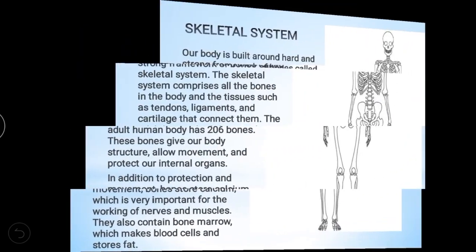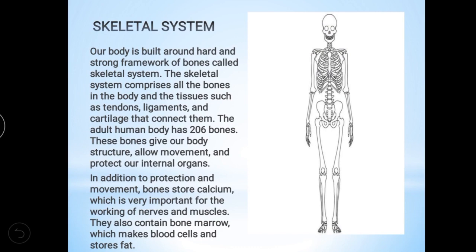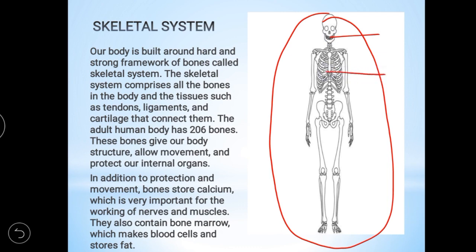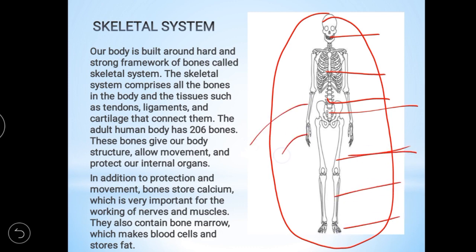We will move on to the next topic. First we are going to learn the skeletal system. Can you see the picture? There is a skeletal system. In the head part it is a skull; the heart is protected by the ribcage; there is a spinal cord, girdles, legs, fingers, hands, and shoulder bone. These are parts of the skeletal system.